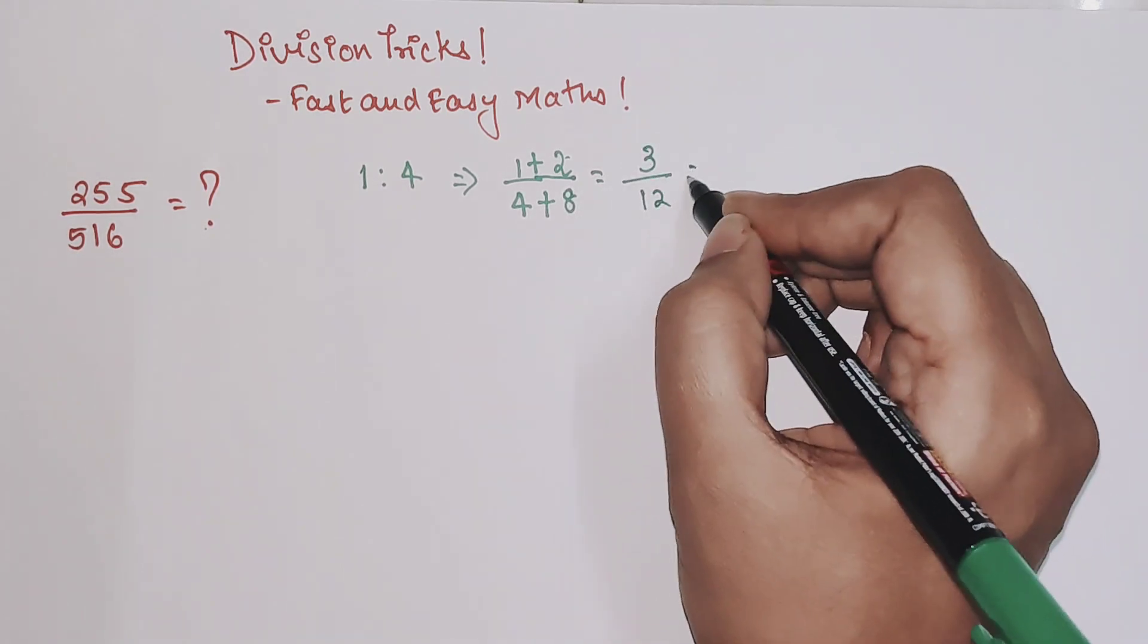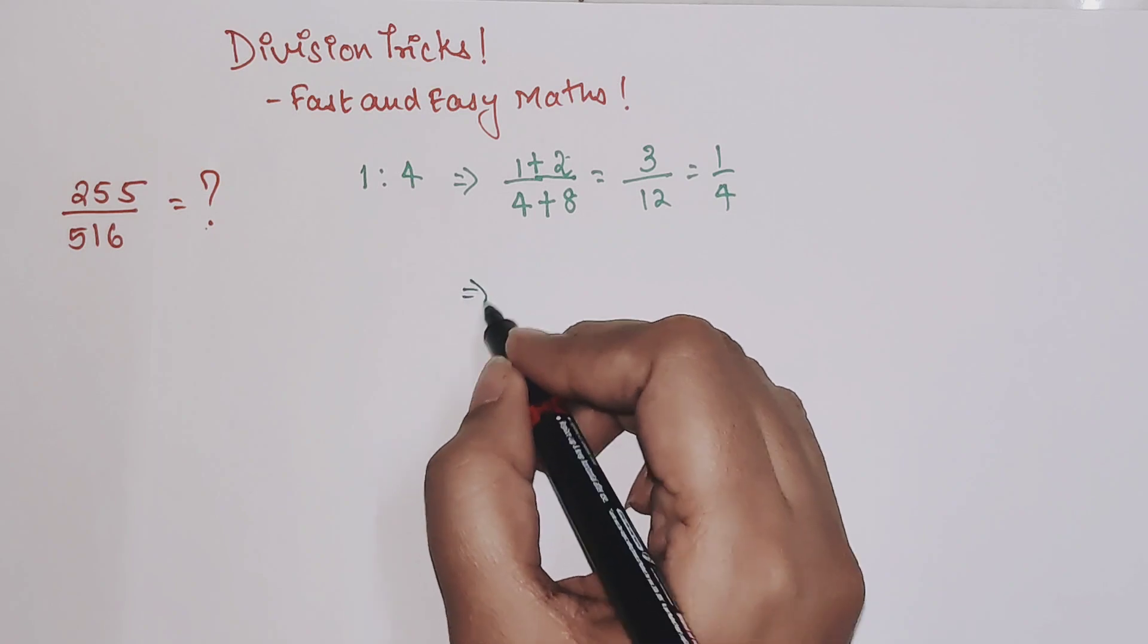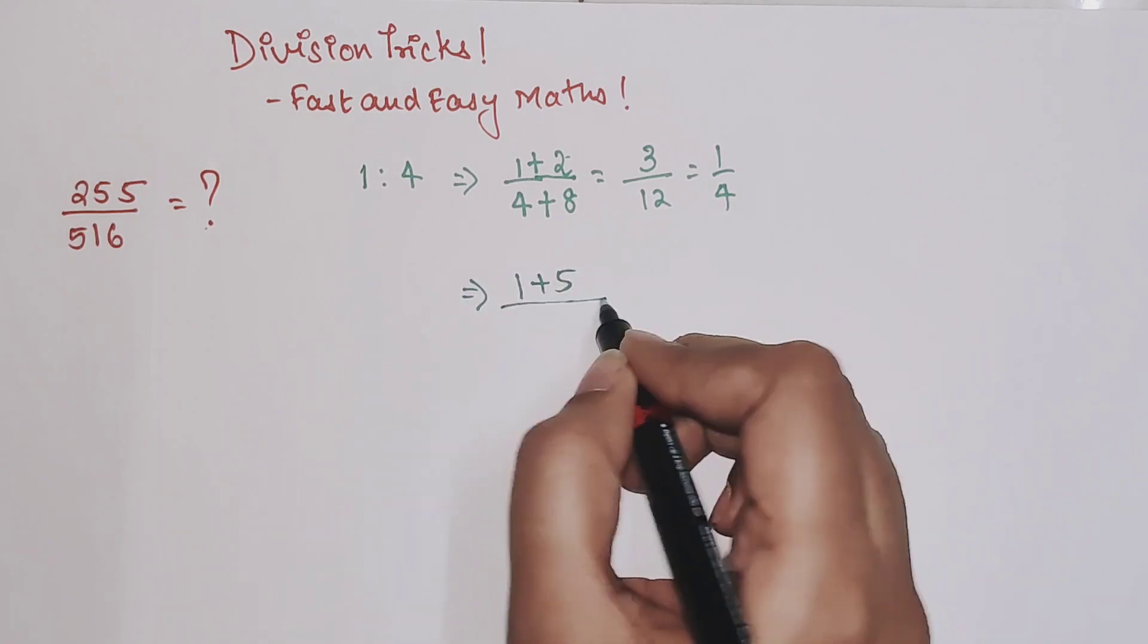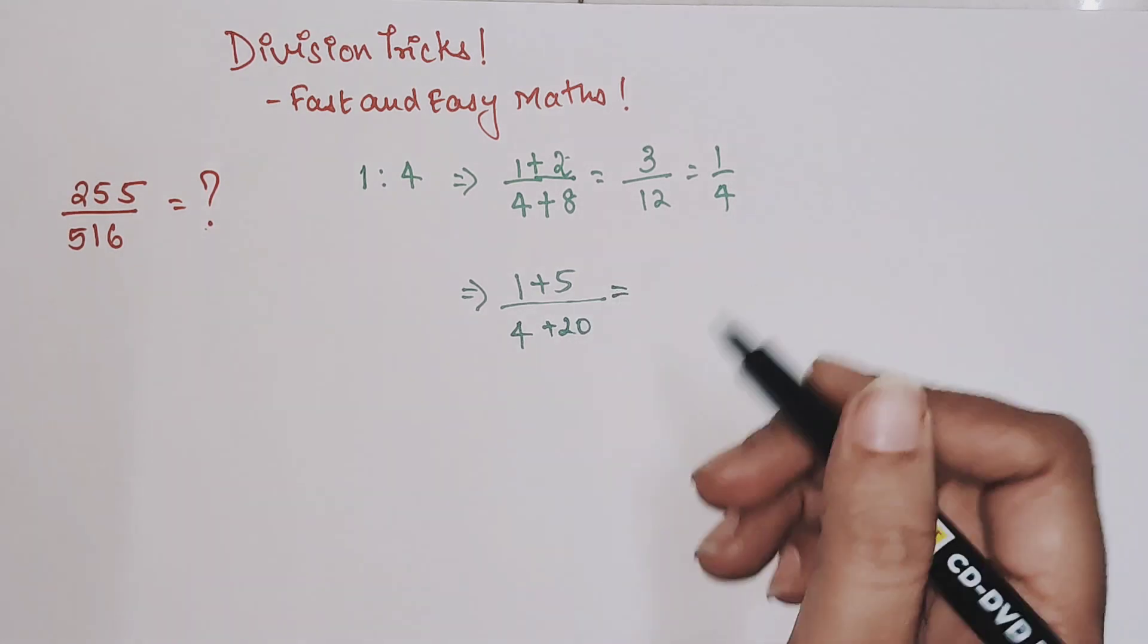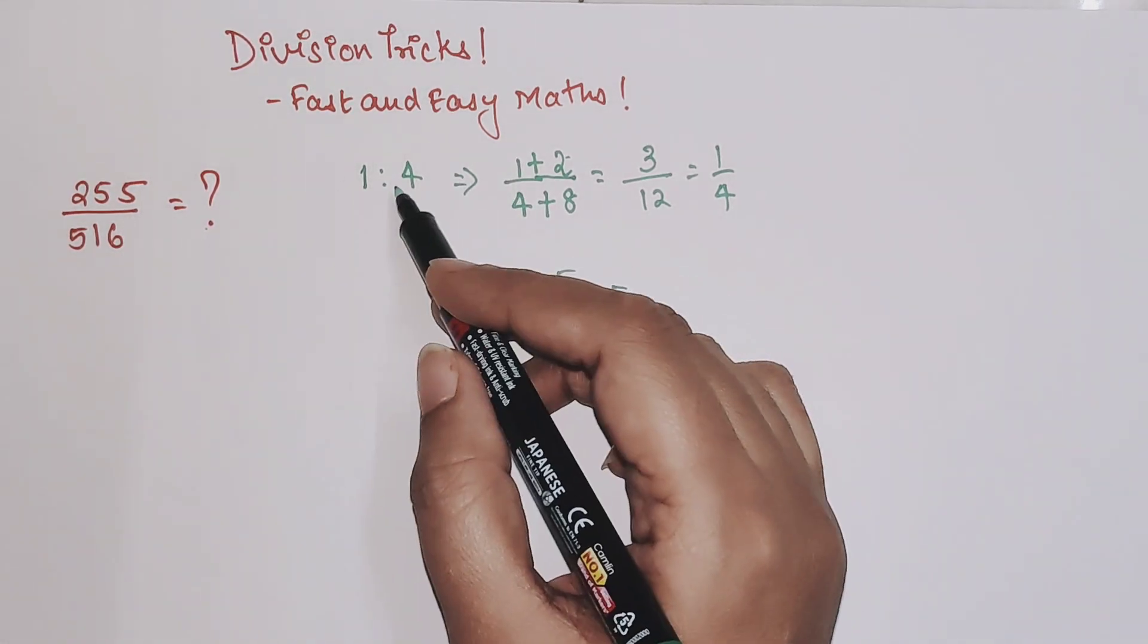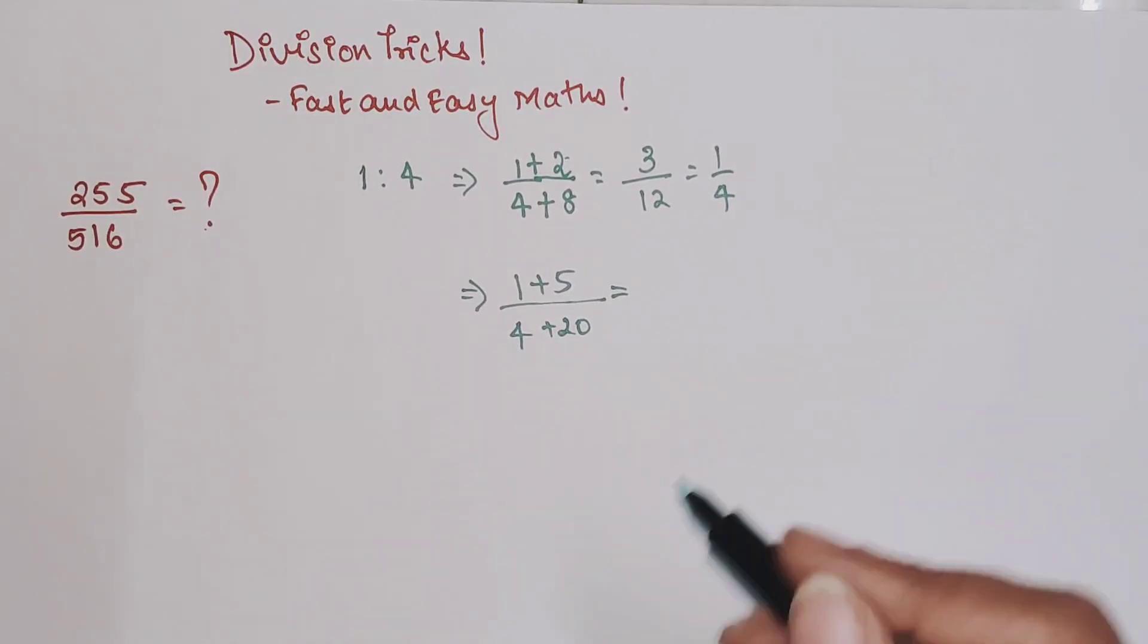So 2×4 will get you 8, then you are getting 3/12 which is eventually coming out to be 1/4. You always have to remember that whatever, let's say if I'm adding 1+5, I'm going to add 4+20.